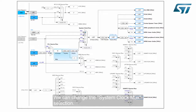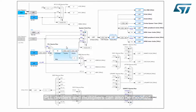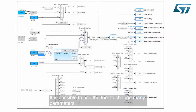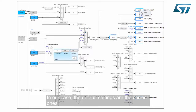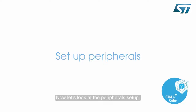We can change the system clock MUX selection. PLL dividers and multipliers can also be modified. It is possible to use the tool to change many parameters. In our case, the default settings are the correct ones. Now let's look at the peripheral setup.